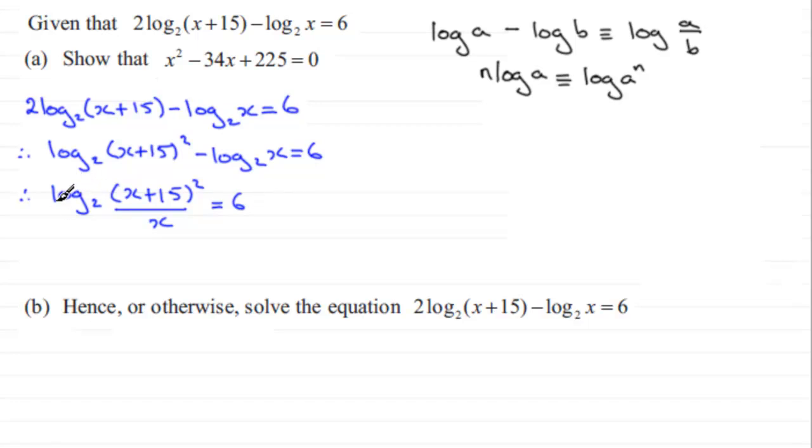Now what we've got to do is remove this log. I call it anti-logging, but essentially it relies on this particular rule: if you have the log of a number a in a base c and we're told it equals n, that if we remove the log, it's the same as saying that a equals the base c to the power n. So I can apply this rule here and say that therefore x plus 15 all squared over x equals the base, which is 2, to the power 6.